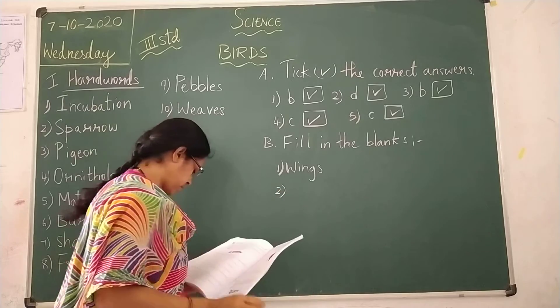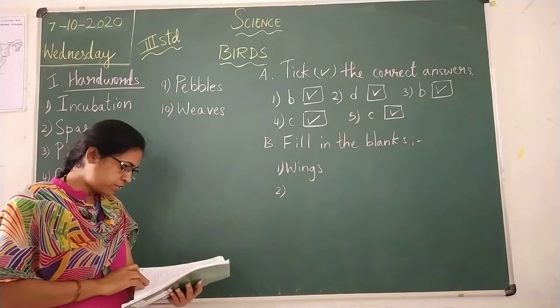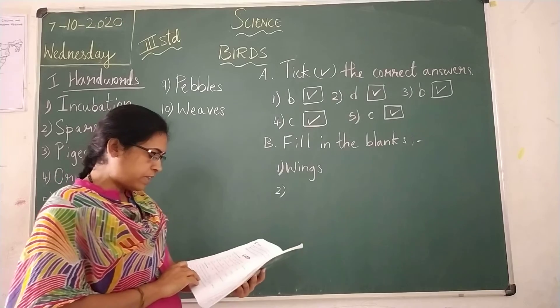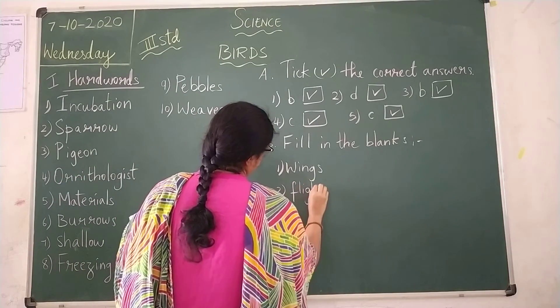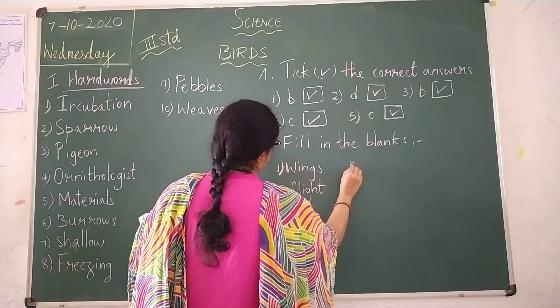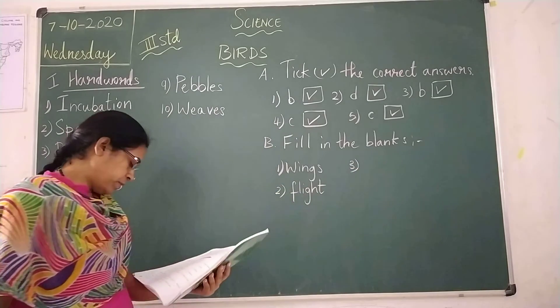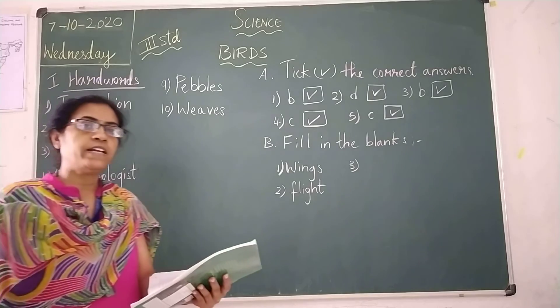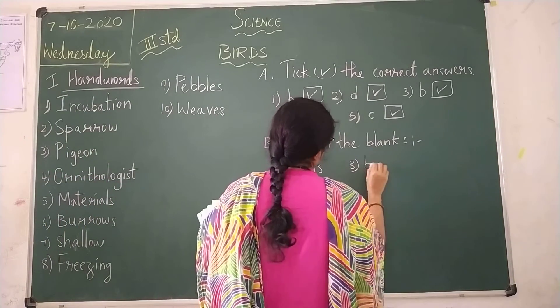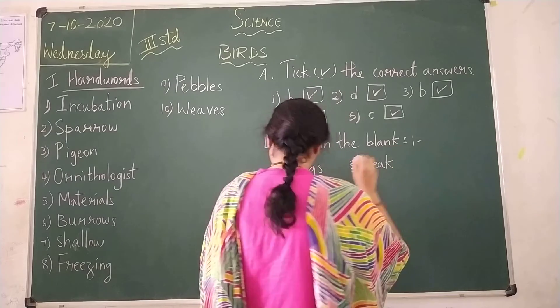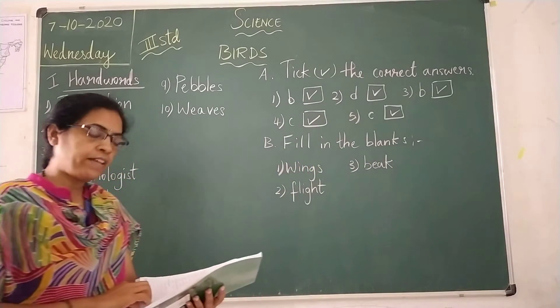Second one. The feathers attached to the tail and wings help a bird fly. This is flight feathers. F-L-I-G-H-T. Flight feathers. Third one. Birds use their beak to catch and eat their food. Birds use their beak.